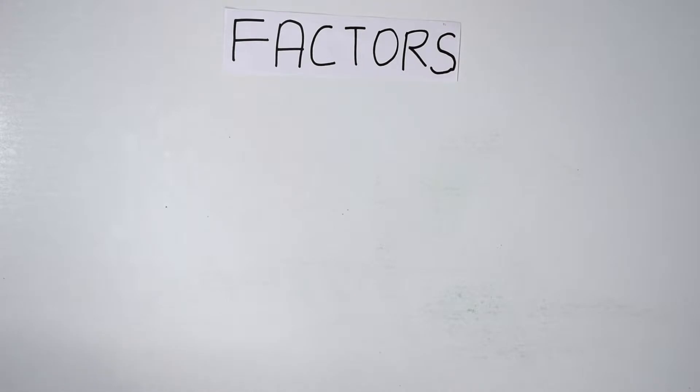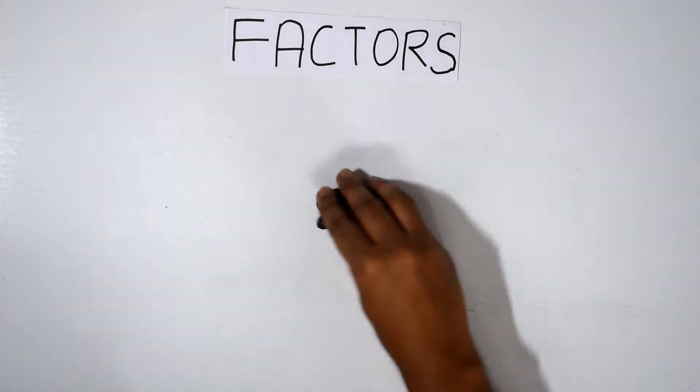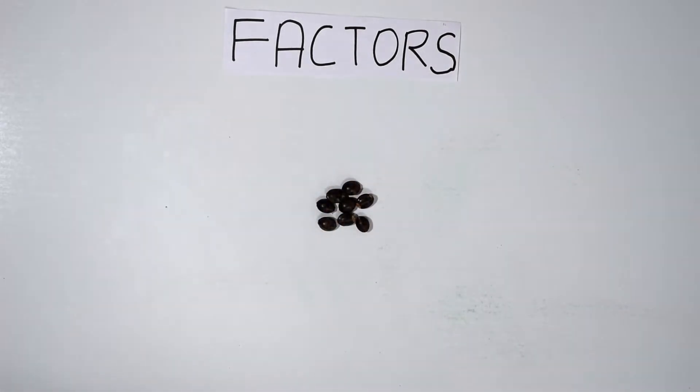Now let's consider the situation. Durga has eight seeds with her and she wants to arrange them in such a way that all the rows have the same number of seeds and the columns have the same number of seeds.